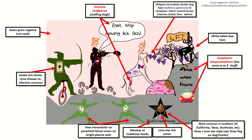What you'd find on that stain would be a mulberry intracellular inclusion — an intracellular inclusion with a mulberry appearance in the cytoplasm. That is represented here by these mulberries growing on this mulberry tree, as well as the mulberries within these neutrophils and monocytes within the dog. It can infect several tissues like the marrow, lymph, liver, and spleen, and you'll see some of those symptoms shortly.